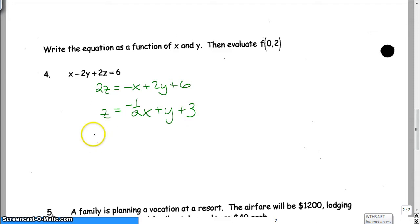So to write this in function notation, we are going to say f(X,Y) is equal to negative 1/2 X plus Y plus 3. And then if I want to evaluate f(0, 2), that's just going to be negative 1/2 times 0 plus 2 plus 3, which is equal to 0 plus 2 plus 3 is 5. And that is function notation and solving for Z when you have three variables.